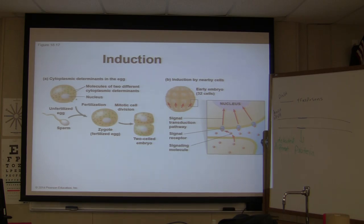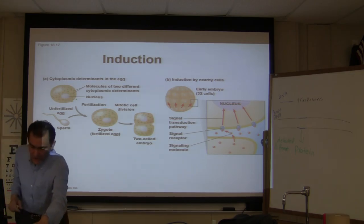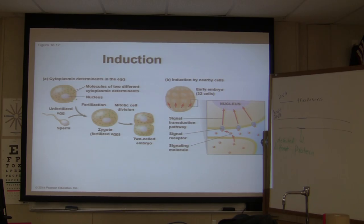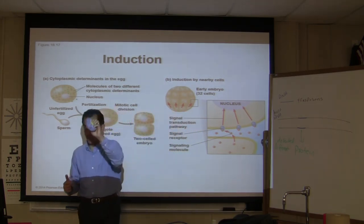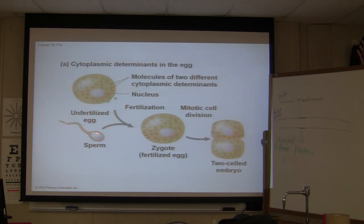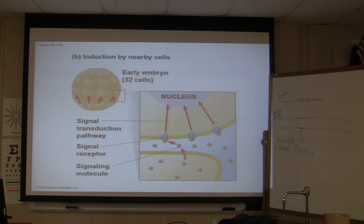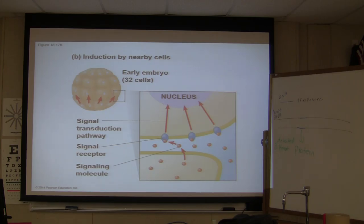Cell-to-cell signaling involves molecules carrying signals from sending cells to receiving target cells — a key mechanism in coordinating cellular activities. In most cases, a signal molecule binds to a receptor protein in the plasma membrane of the target cell and activates a signal transduction pathway, triggering a specific response. The activated transcription factor attaches to the DNA and triggers transcription of a specific gene. The mRNA is translated into a new protein, which changes the structure or function of the receiving cell.